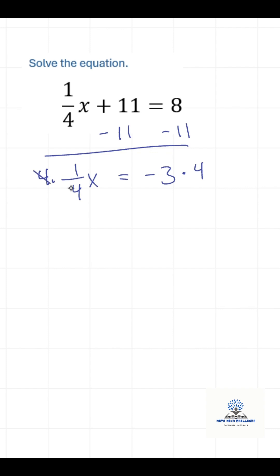4 divided by 4 on this side, or 4 times 1 fourth, is just 1. Make sure you can think about it both ways. And then over here we have negative 12, and so x is negative 12.